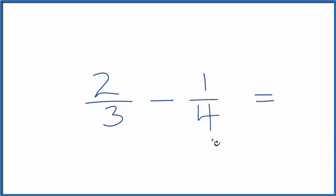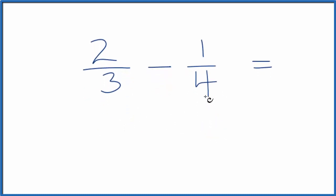To subtract or add fractions, you need to get the denominator, that's the number on the bottom, to be the same. So let's list the multiples of 3 and 4.